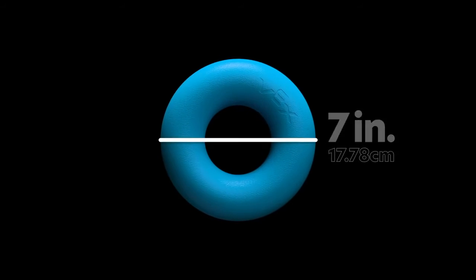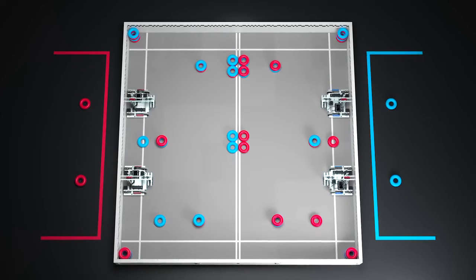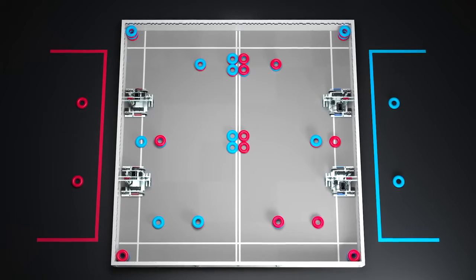The game's primary scoring object is a plastic ring. Rings have an outer diameter of 7 inches, an inner diameter of 3 inches, and a thickness of 2 inches. There are 48 rings on the field, 24 red and 24 blue.